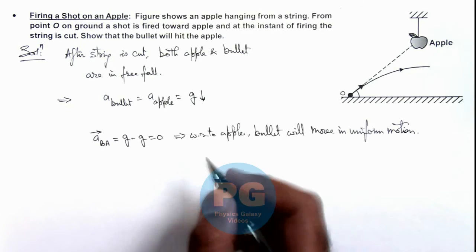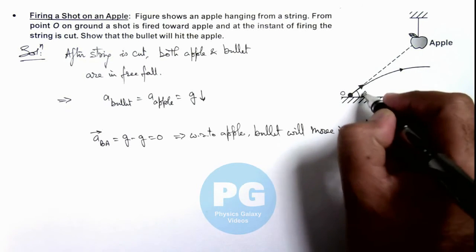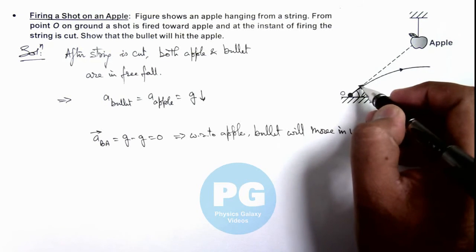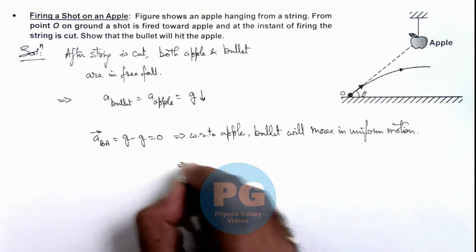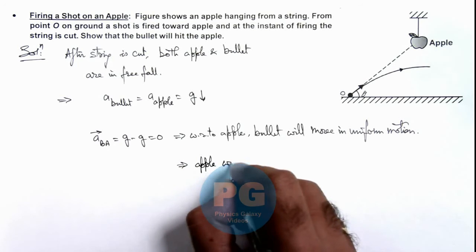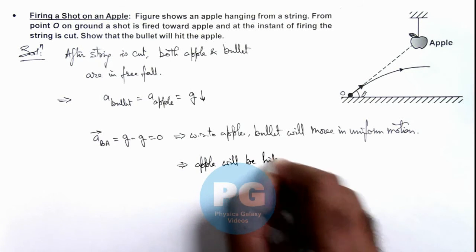That directly implies if bullet is heading towards the position of apple, and we can directly say with respect to apple its acceleration is zero, so it will continue moving in a straight line. This implies apple will be hit by the bullet.